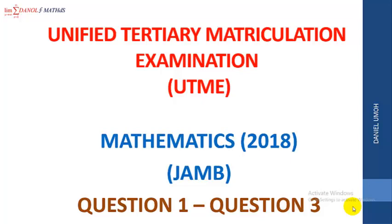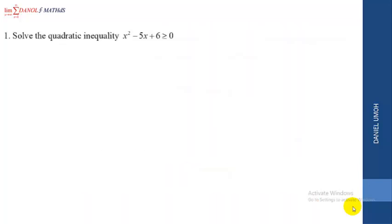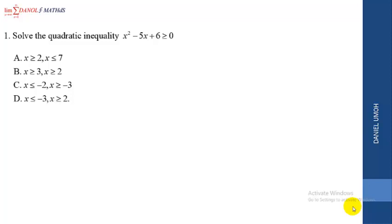We start with Question 1, which says: solve the quadratic inequality x squared minus 5x plus 6 greater or equal to 0. Below are the options. We now go into the solution, because mathematics is not about guesswork. We bring down the problem: x squared minus 5x plus 6 greater or equal to 0.